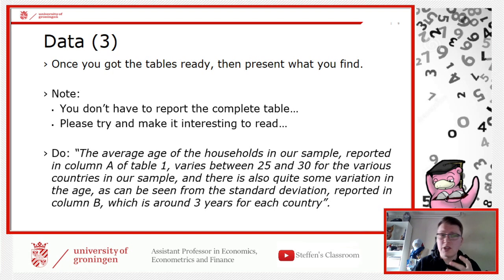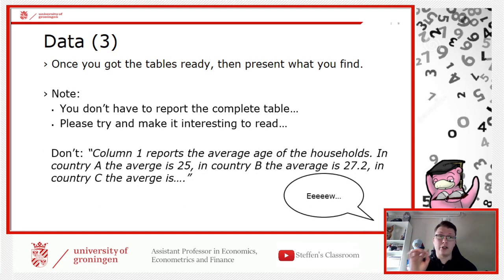Let's start with a do. You can talk about the average household in our sample reported in column A in table 1, varies between this and that. And there's also quite some variation in age. You can see from the standard deviation. I'm just trying to incorporate a little more interesting word of choice and compare these results to each other. Just a coarse look over the data, just to give a quick view.